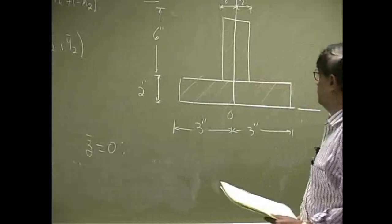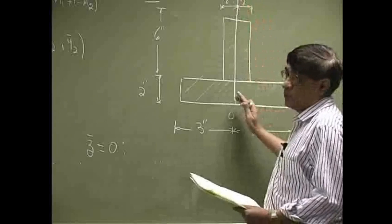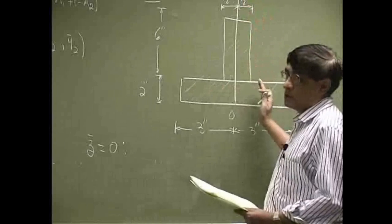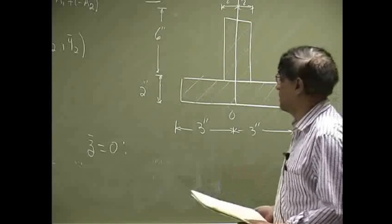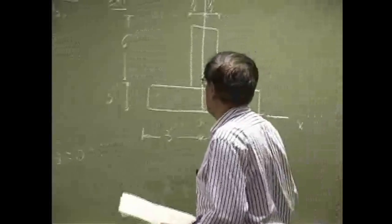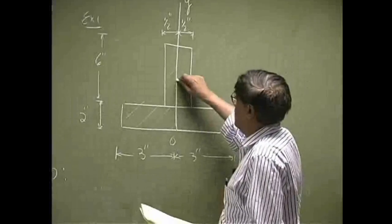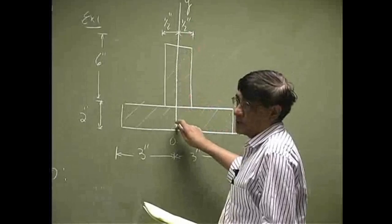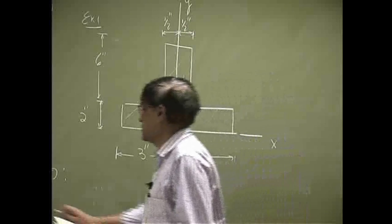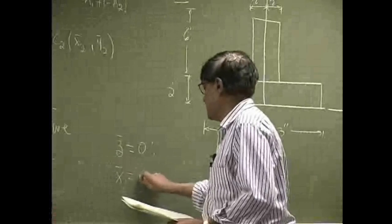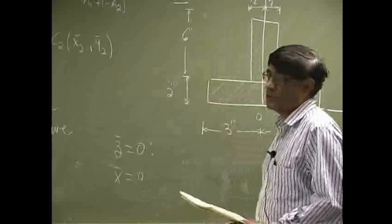Then, another thing we notice is that the y-axis divides the whole cross section into middle, which means your centroid for this has to be on the y-axis. And if it is on the y-axis, we can safely say that x-coordinate will also be 0.